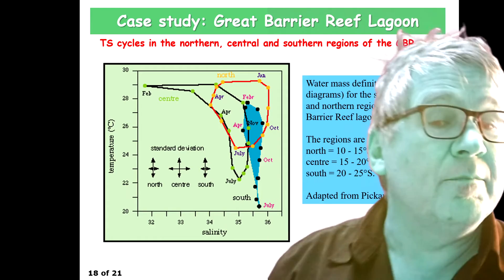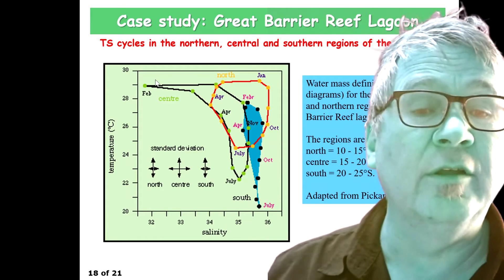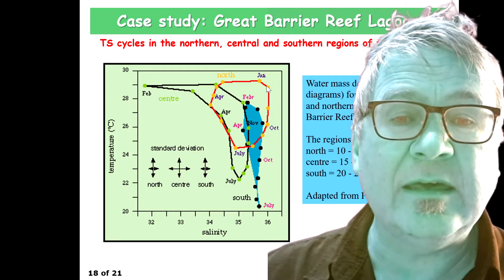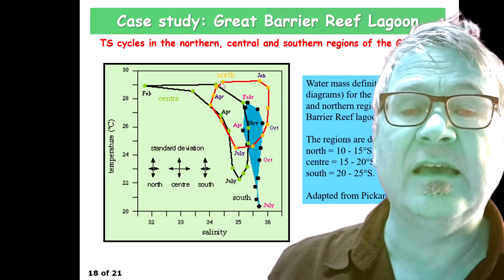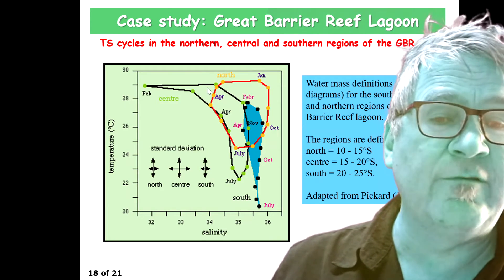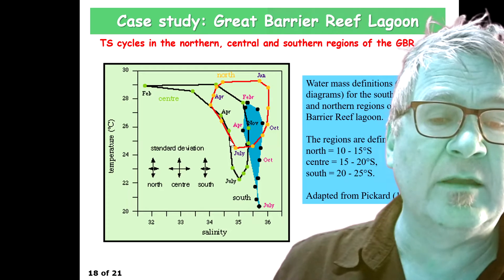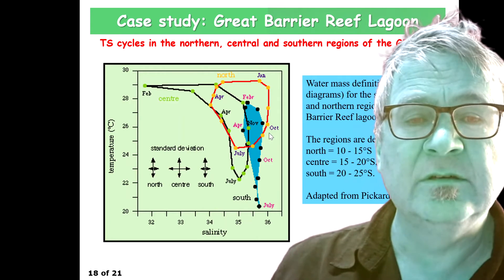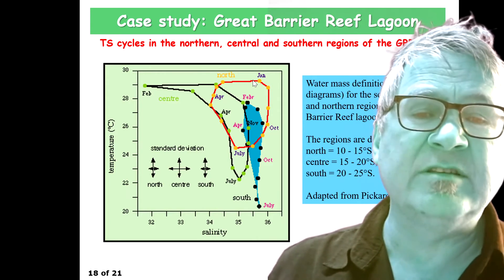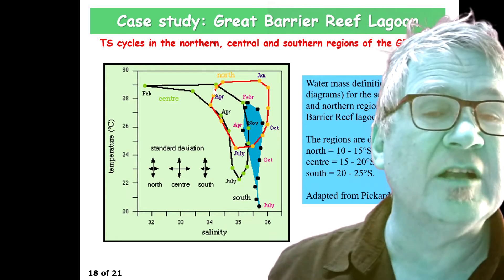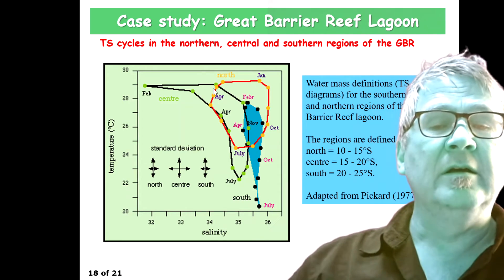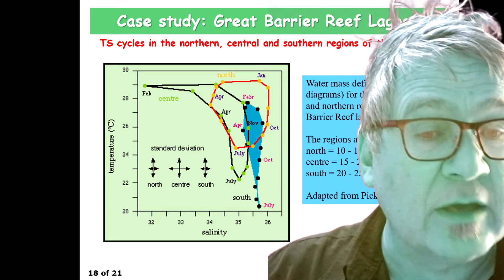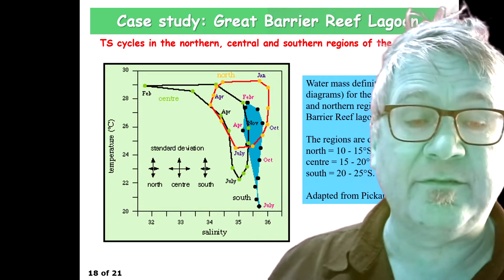Going further to the northern parts, you get almost a circle — again anti-clockwise. July is the coldest, January is the warmest month. You get much broader and larger salinity changes over more months.